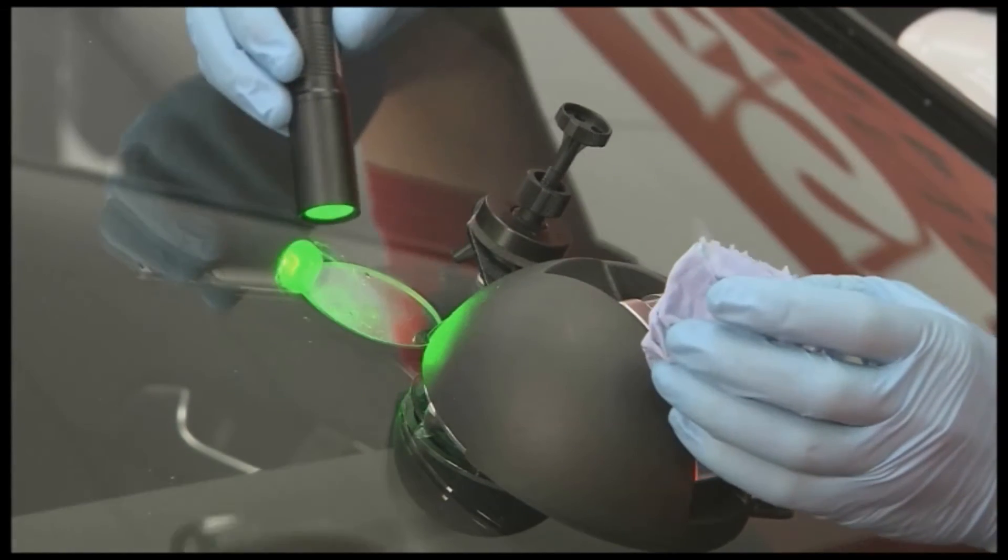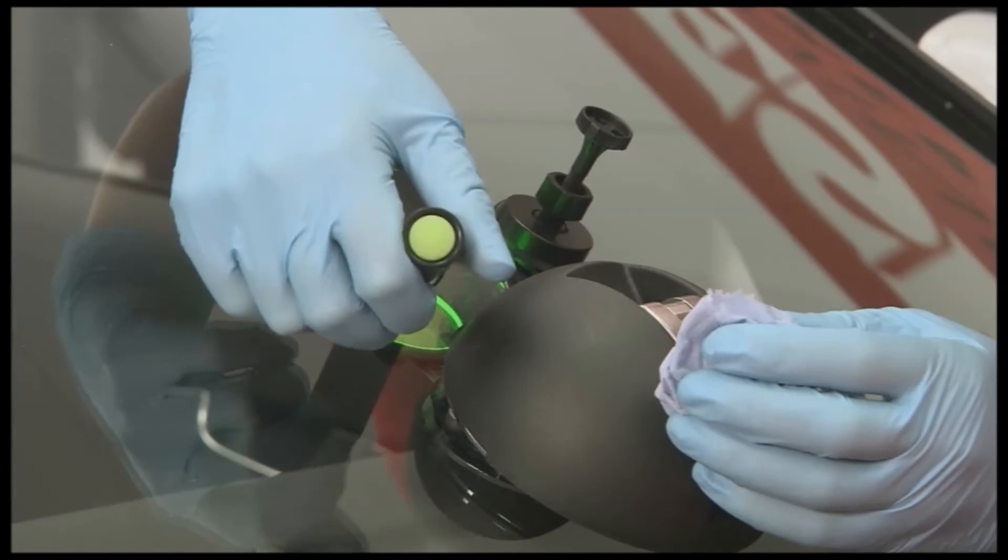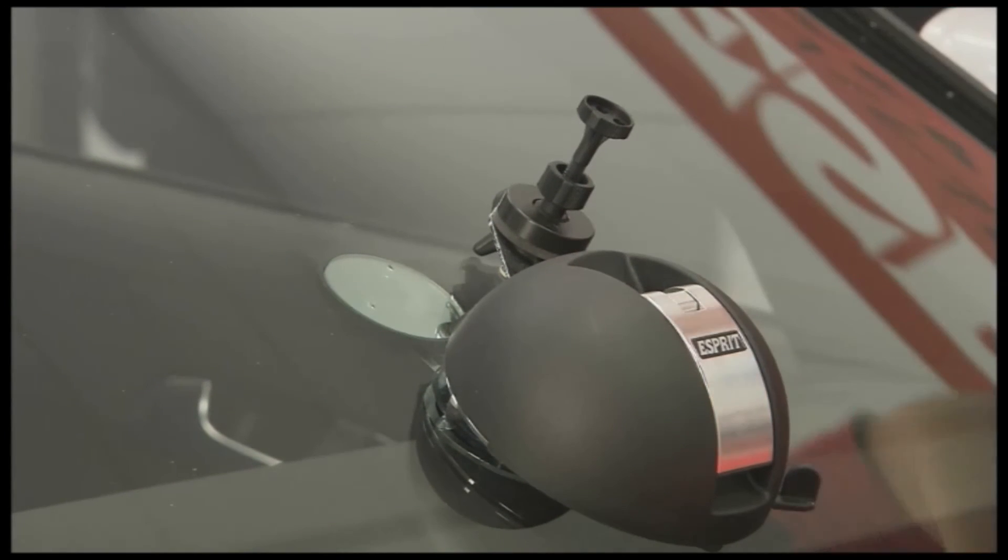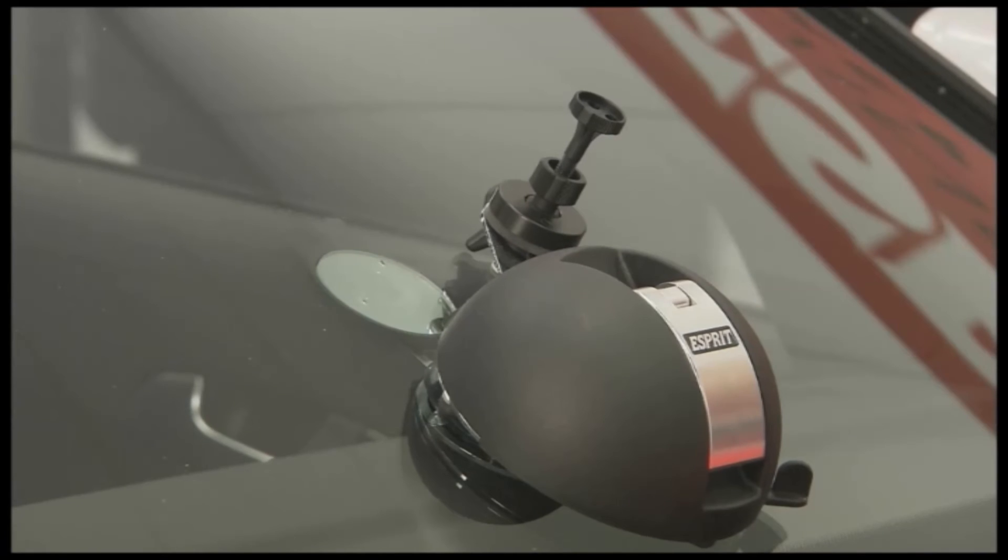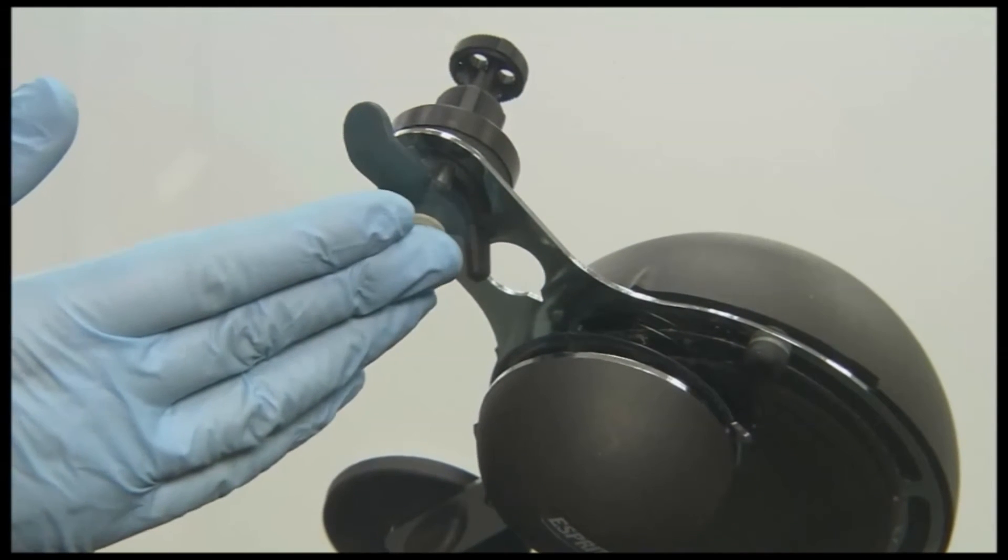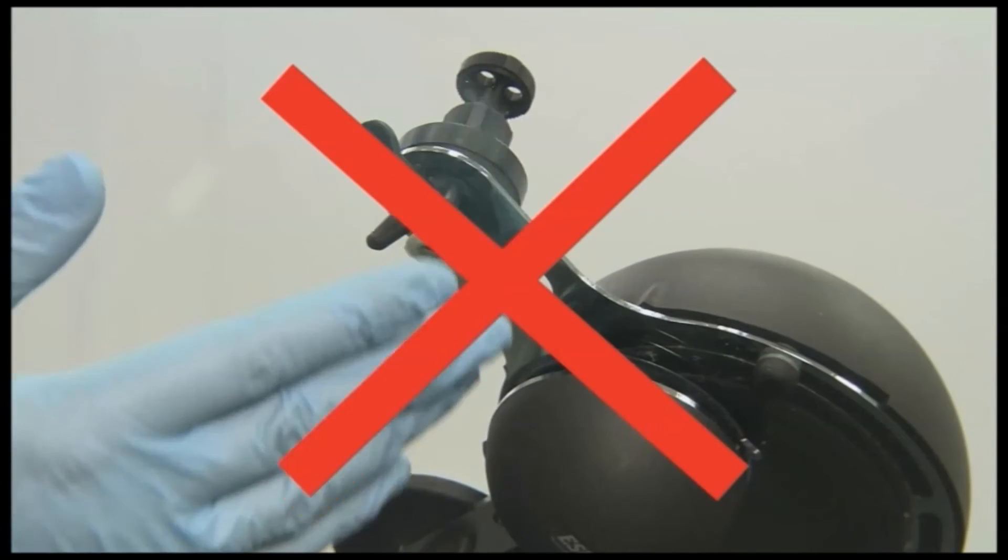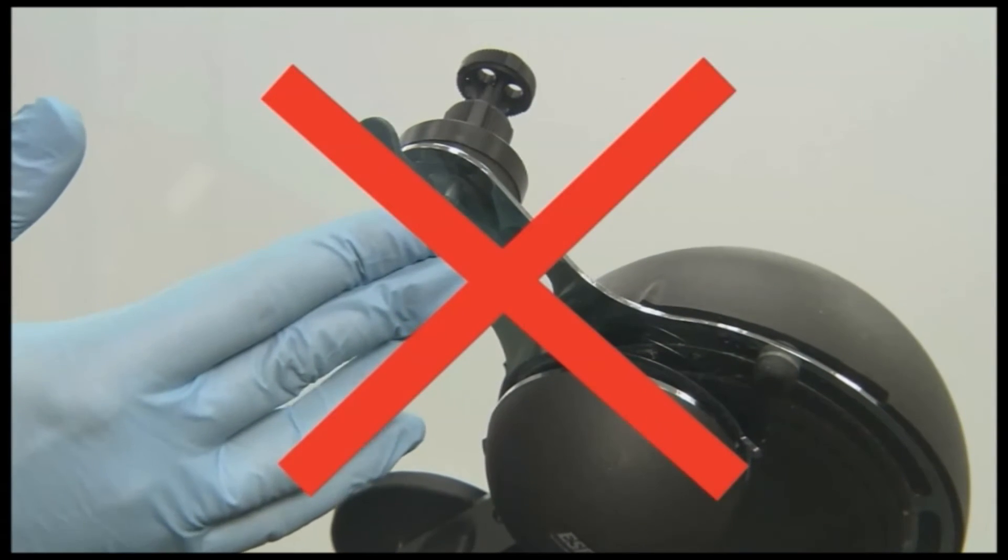The repair is progressing satisfactorily if, when viewed from the side, the cracks appear to vanish. From square on they will remain visible until after curing. If the resin fails to penetrate to the ends of any of the cracks, under no circumstances should pressure be applied to the screen to speed up the process.